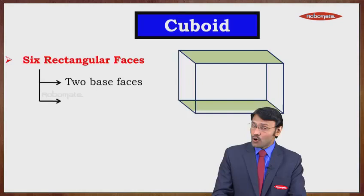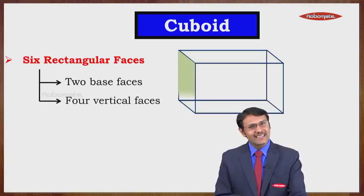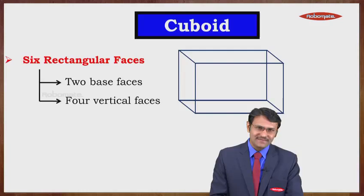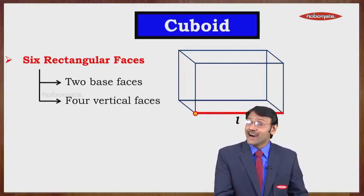A cuboid has two base faces and four vertical faces — the first, second, third (at the back), and the fourth. The three dimensions of a cuboid are length, breadth, and height.